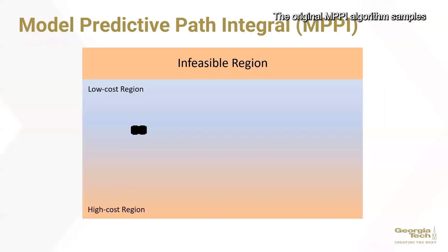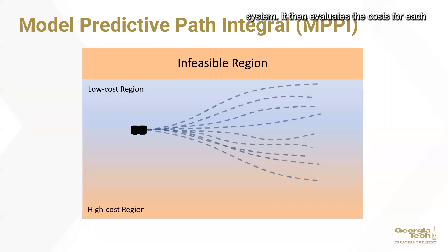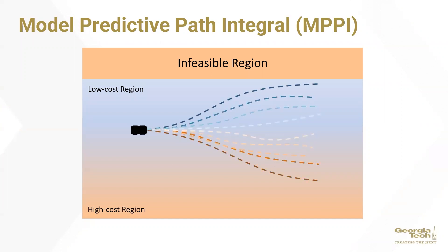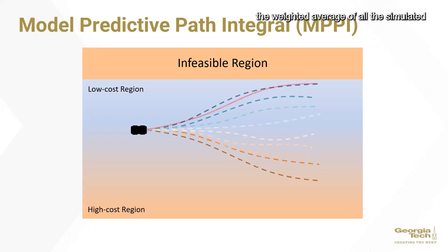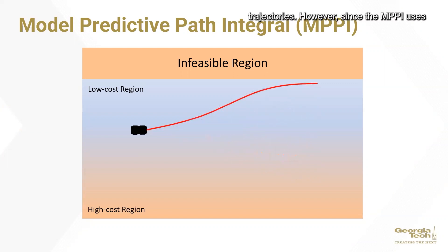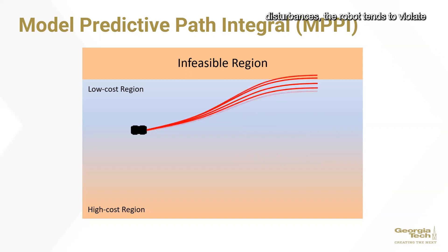The original MPPI algorithm samples trajectories using a disturbance-free system. It then evaluates the costs for each of the simulated trajectories and assigns weights to them based on their costs. The optimal controls are obtained by taking the weighted average of all the simulated trajectories. However, since MPPI uses deterministic dynamics and ignores potential disturbances, the robot tends to violate constraints while executing the controls.